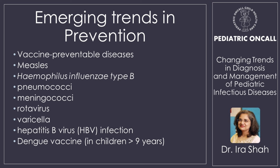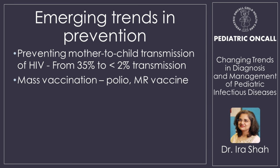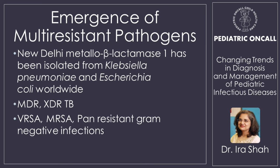The dengue vaccine, unfortunately, is not currently available in India — it works well with children more than 9 years of age. HIV epidemic has come down — from 35% transmission rate from mother to child, we are now talking about no child born with HIV. We are talking about mass immunization for polio and MR. And now we are also facing emergence of multi-resistant pathogens — New Delhi metallo-beta-lactamase, XDR and NDR TB, ESBL, and pan-resistance. India really needs to work on antibiotic stewardship.